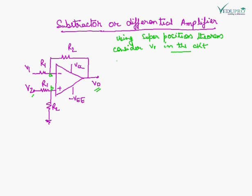The inverting amplifier output is the gain multiplied by the input. The gain will be minus RF upon R1, and the input here is V1. So minus RF upon R1 into V1 is the first output due to V1 in this circuit.